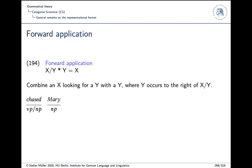So we had forward application. An example: 'chased Mary'. Chased is a VP looking for an NP, and here we have the NP. If we combine them, the result is a VP. This is done by forward application, and we have a little symbol — an arrow — indicating in which direction this combination took place. That's straightforward.